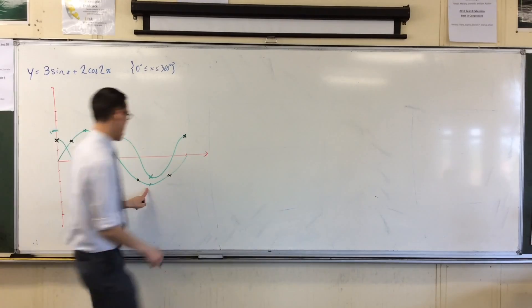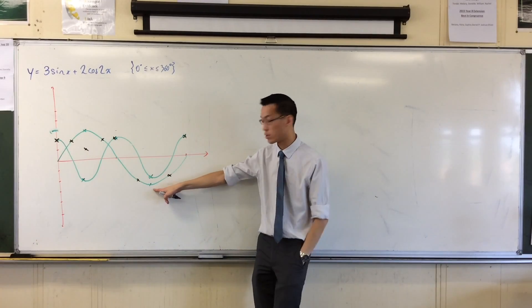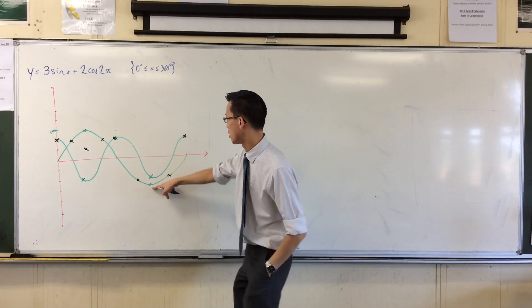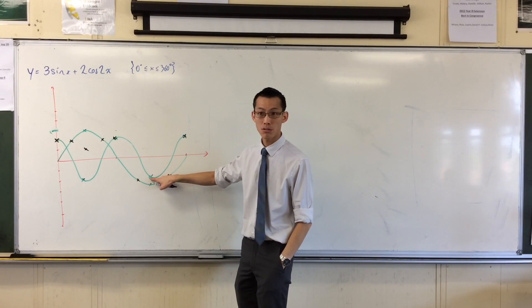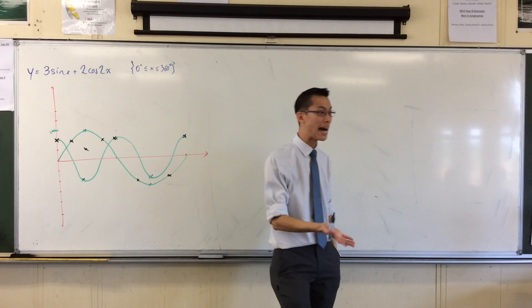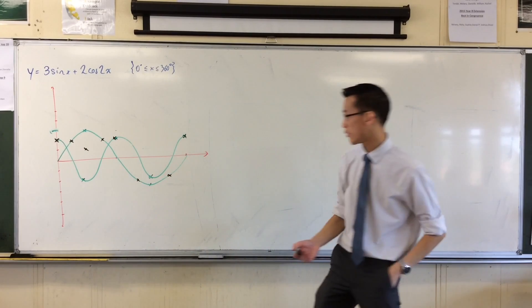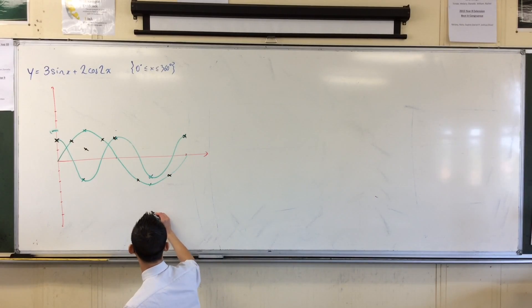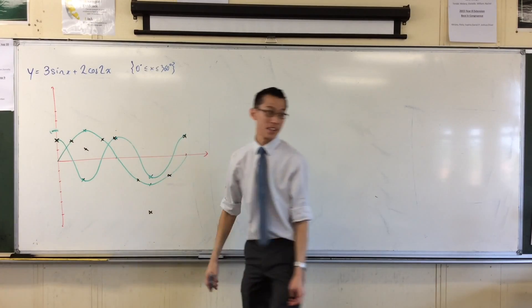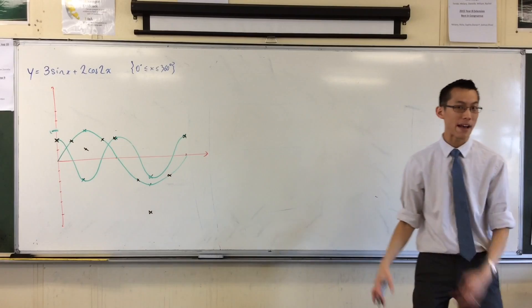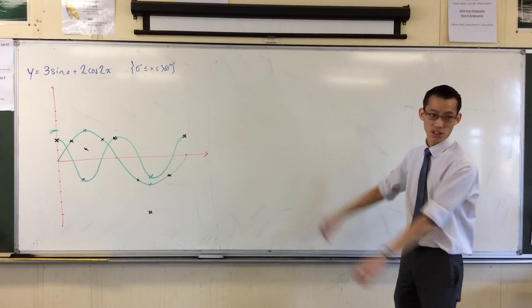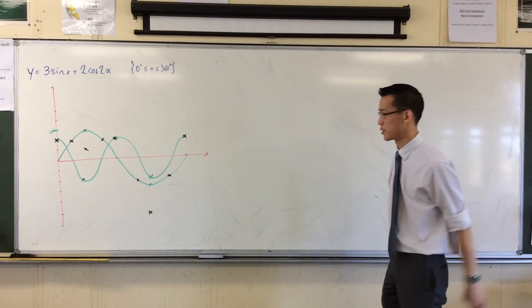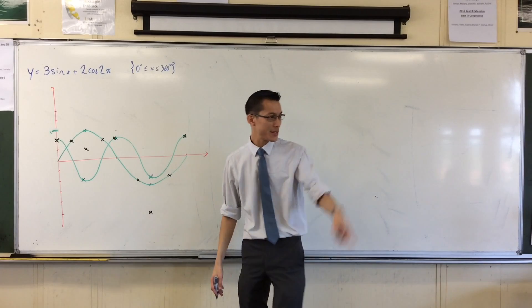In exactly the same way, I've got another pair of stationary points coinciding here. So I've got, well, let's have a look here. This is negative two, and this is negative three. So when you add them, you get negative five, all the way down the bottom. And you know it's all the way down the bottom, because that's the lowest that both graphs can get. So you put them together, and that's the lowest. It's the absolute minimum, in other words.